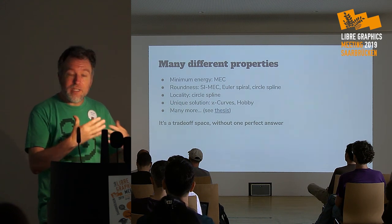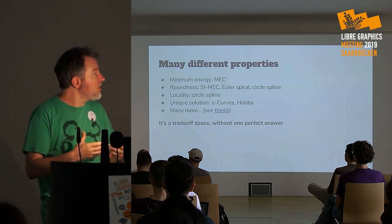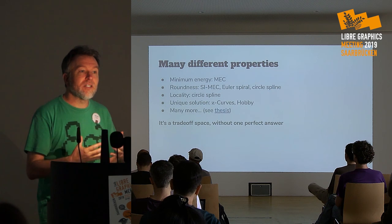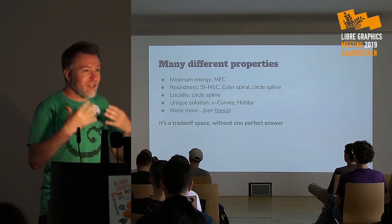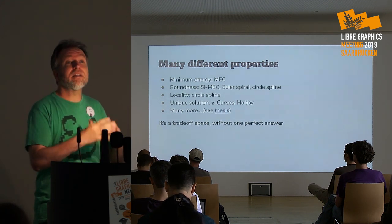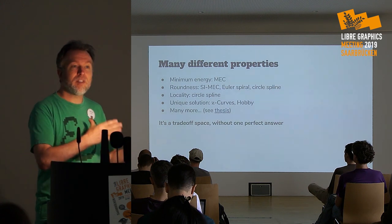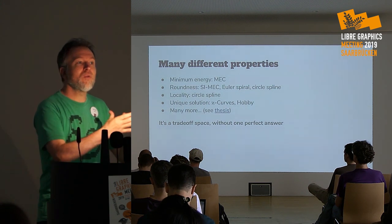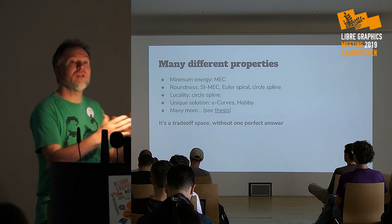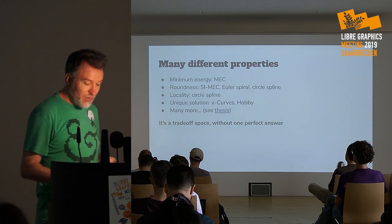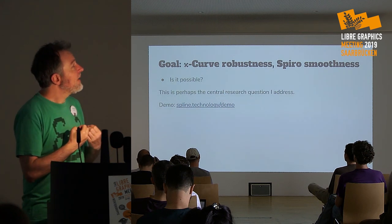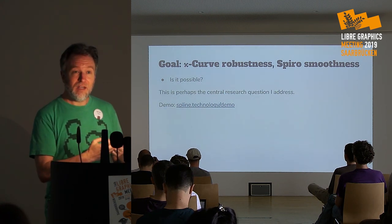There are other properties discussed in the thesis. The key takeaway is: I searched for the one true spline that would do everything perfectly, but within this two-parameter framework it's clear that does not exist. Instead it is a trade-off space where you decide what properties you want — and once you know that, you can choose the curve family that gives you the spline you want. The properties I want are the robustness of Adobe Kappa curves combined with most of the smoothness of the Euler spiral spline.